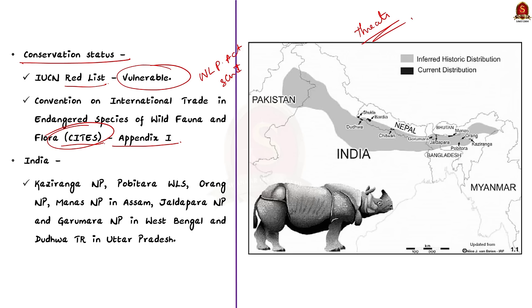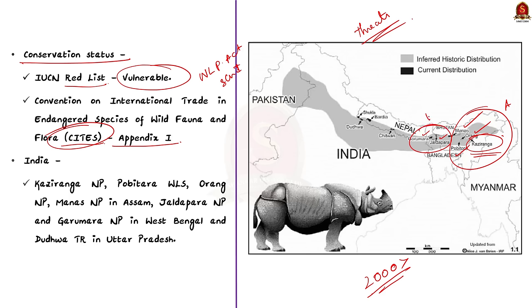After strict protection and management measures, the Greater One-Horned Rhino was brought back from the brink of extinction. However, only less than 2,000 individuals remain in the wild, mostly found in Kaziranga National Park in Assam and Chitwan National Park in Nepal. In India, rhinos are mainly found in Kaziranga National Park, Pobitora Wildlife Sanctuary, Orang National Park, Manas National Park — all in Assam — and Jaldapara National Park and Gorumara National Park in West Bengal, and Dudhwa Tiger Reserve in Uttar Pradesh.